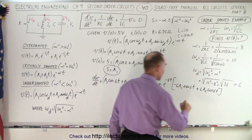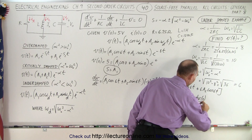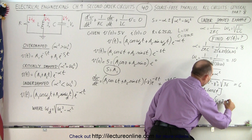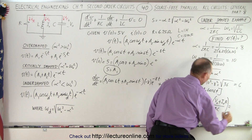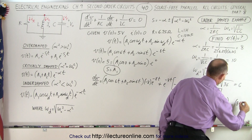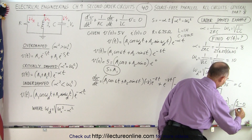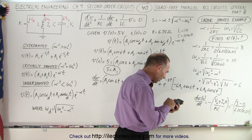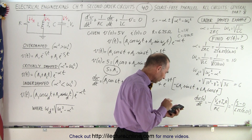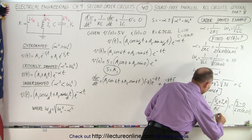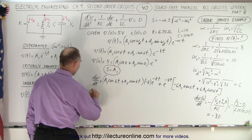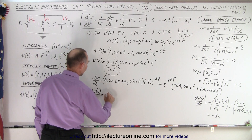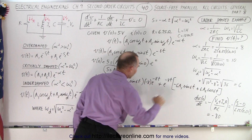We calculate dV/dt at t=0 using the initial conditions. The formula gives dV/dt at t=0 equals negative of (V_0 plus I_0 times R) over RC, which equals negative of (5 minus 0) divided by 6.25 times 0.01. That's 5 divided by 6.25 divided by 0.01, which equals 80, so dV/dt at t=0 equals minus 80.